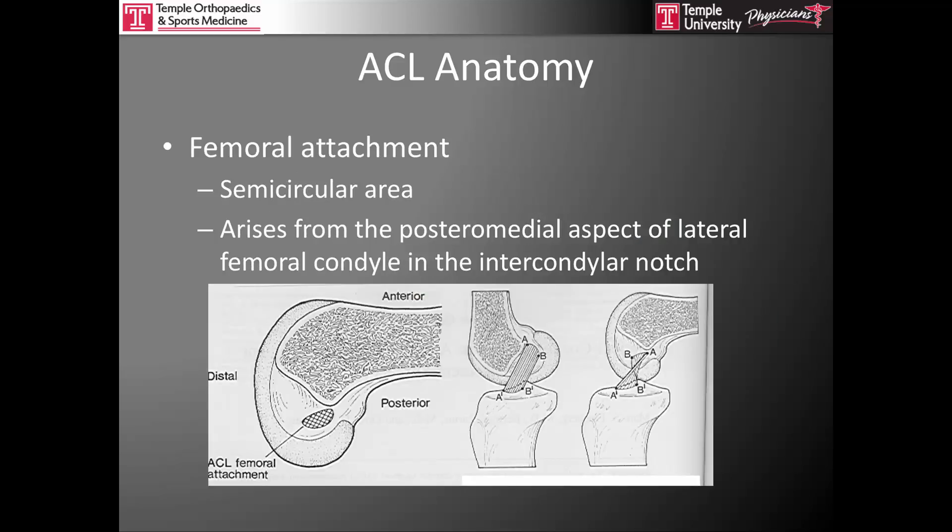At the femoral attachment, there is a semicircular area that the anterior cruciate ligament originates from on the posterior medial aspect of the lateral femoral condyle, and the ACL runs within the intercondylar notch. With the knee fully extended, the fibers of the anterior cruciate ligament are parallel to each other. However, with the knee flexed at 90 degrees — which is often how the ACL is viewed at arthroscopy — these fibers crisscross, and the major bundles are seen in that twisted fashion.